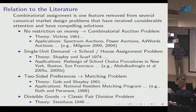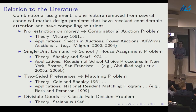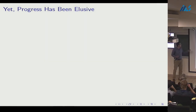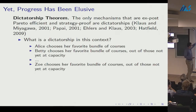If goods were perfectly divisible, we'd have a classical fair division problem — possibly the oldest problem of all, traceable perhaps to the Old Testament. But progress on the combinatorial assignment problem has been elusive.